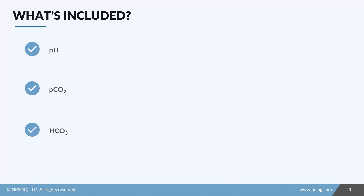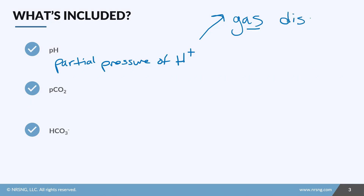Let's review what can be found on an arterial blood gas. First, we have pH, which stands for partial pressure of hydrogen ions. Partial pressure is the concentration of a gas dissolved in the blood plasma — essentially the same concept as concentration but for gases. So hydrogen, CO2, and oxygen are all measured using partial pressure.